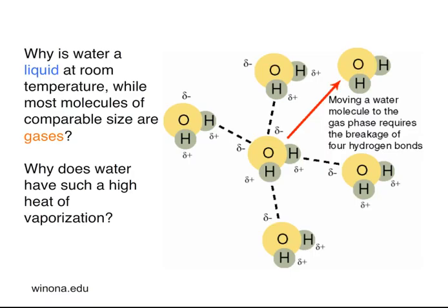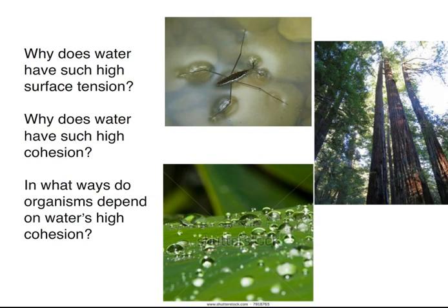Why is water a liquid at room temperature while most molecules of comparable size are gases? It's because each water molecule has the capacity to form four hydrogen bonds, and it takes a relatively large amount of energy to move into the gas phase. Water has a high specific heat and generally resists rapid temperature rise. Because of the extensive hydrogen bonding between water molecules, water has very high surface tension.